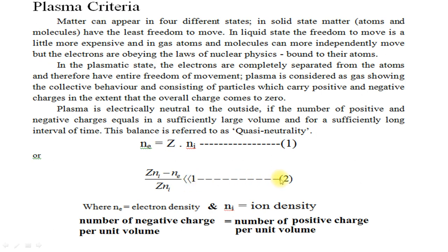Here N_e is electron density and N_i is ion density. The number of negative charges per unit volume is equal to the number of positive charges per unit volume.